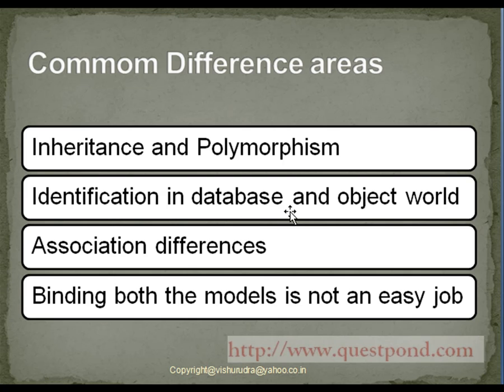There can also be association differences between tables and objects. With respect to tables, one-to-many or many-to-one relationships are mostly used. While in the object world, many-to-many relationships are mostly used. As a result, there can be differences between the associations in both these worlds.